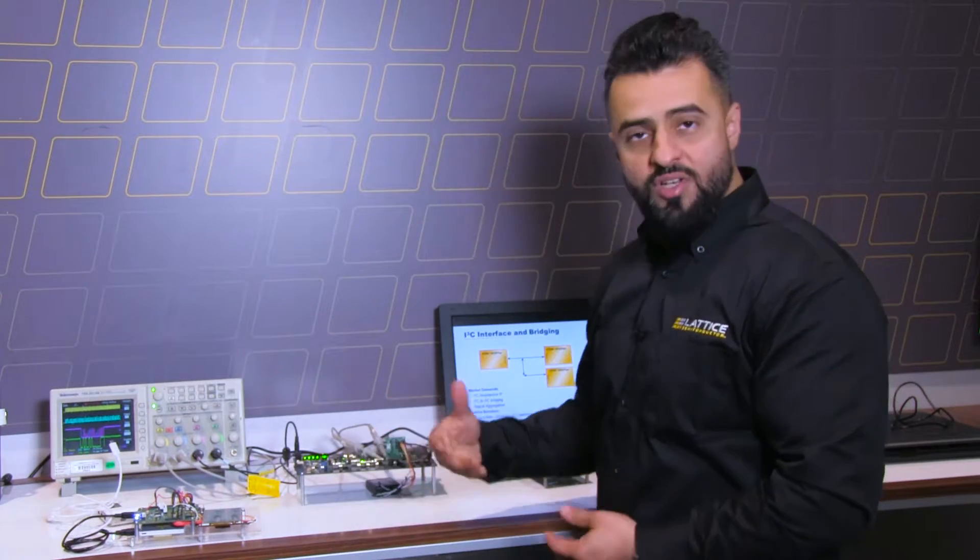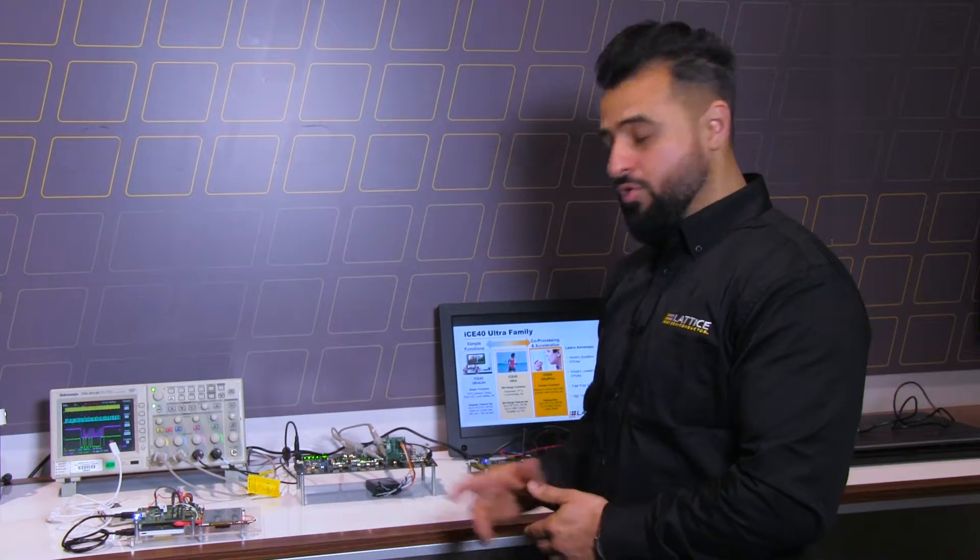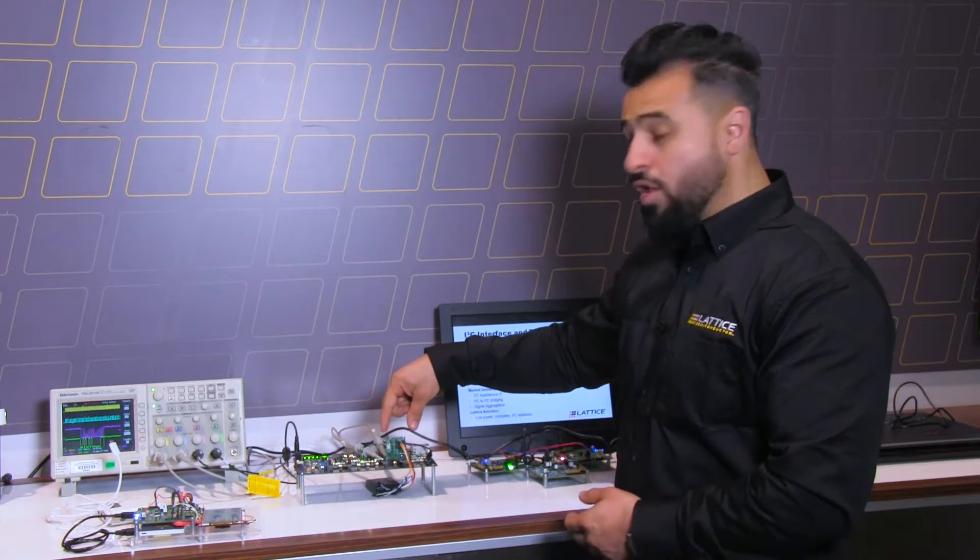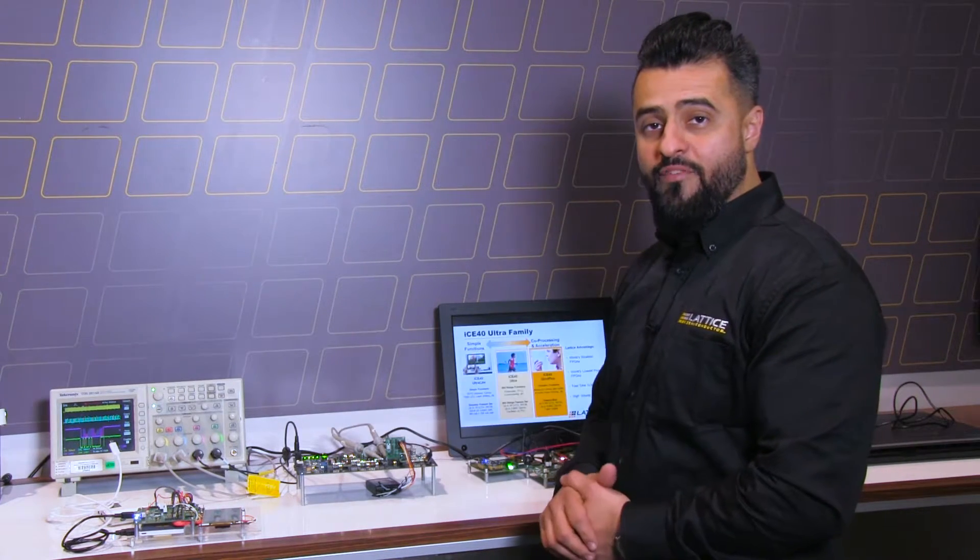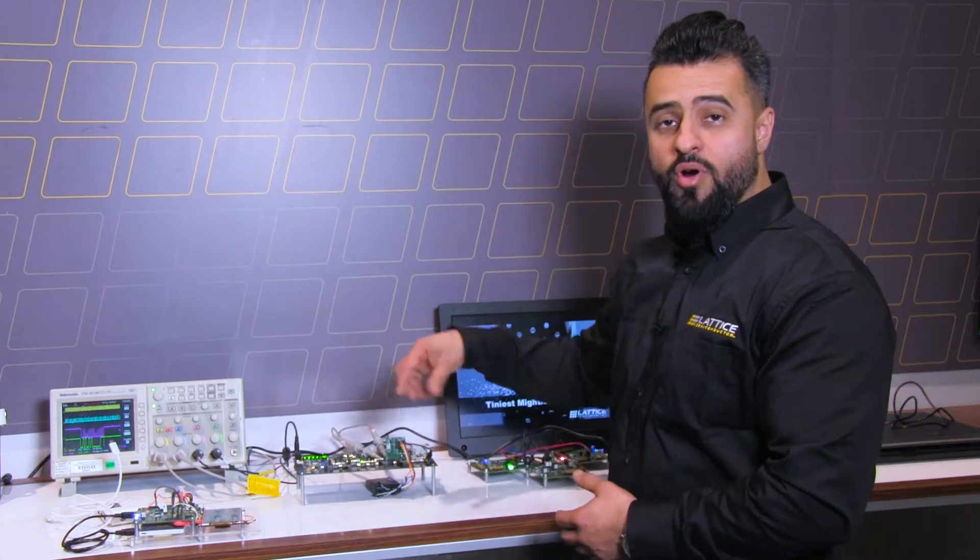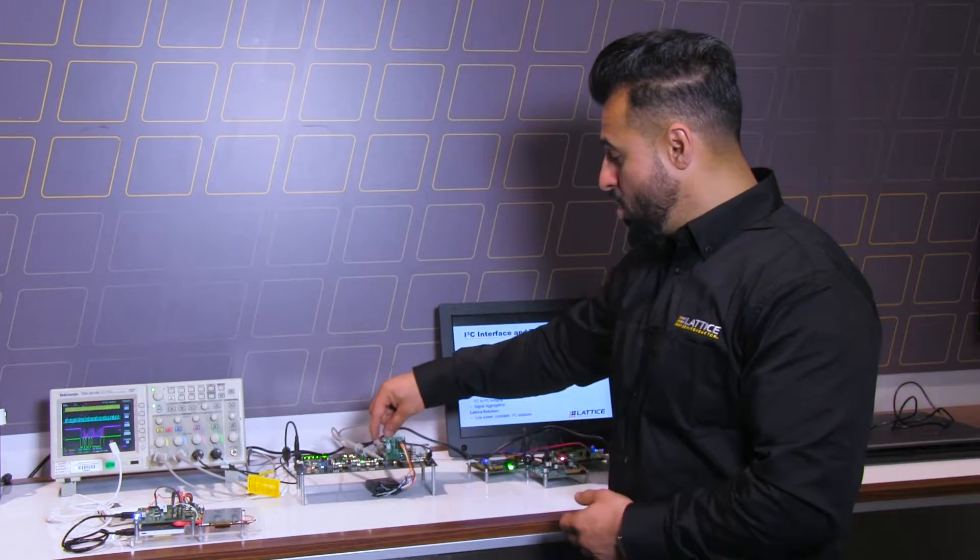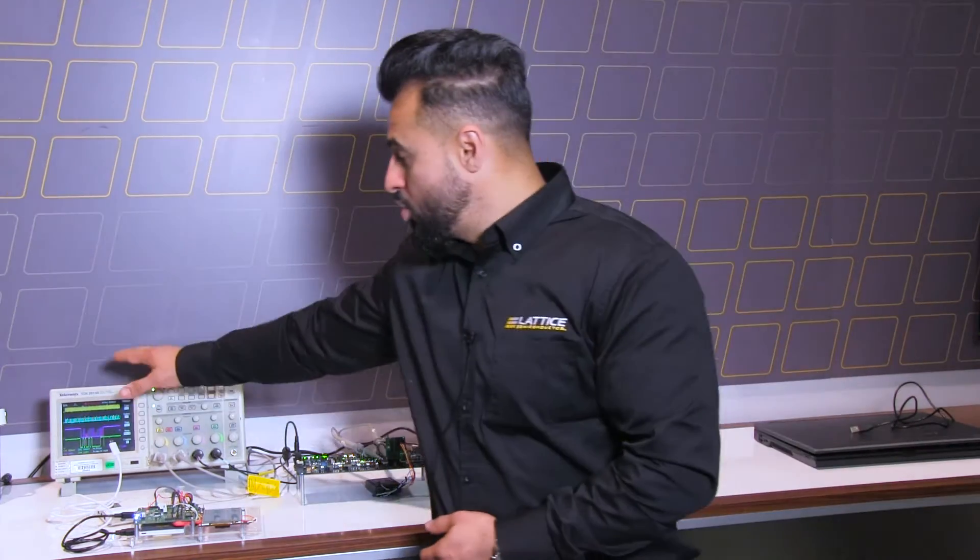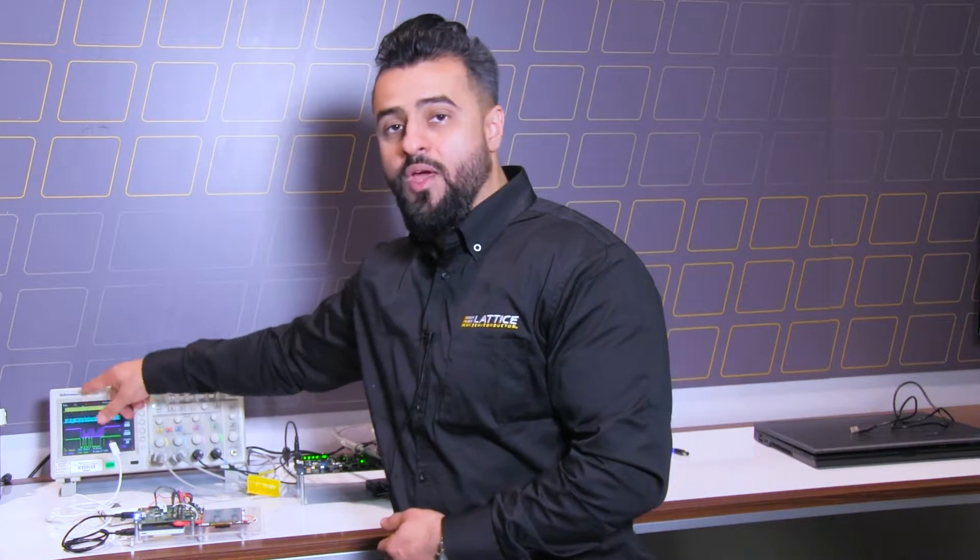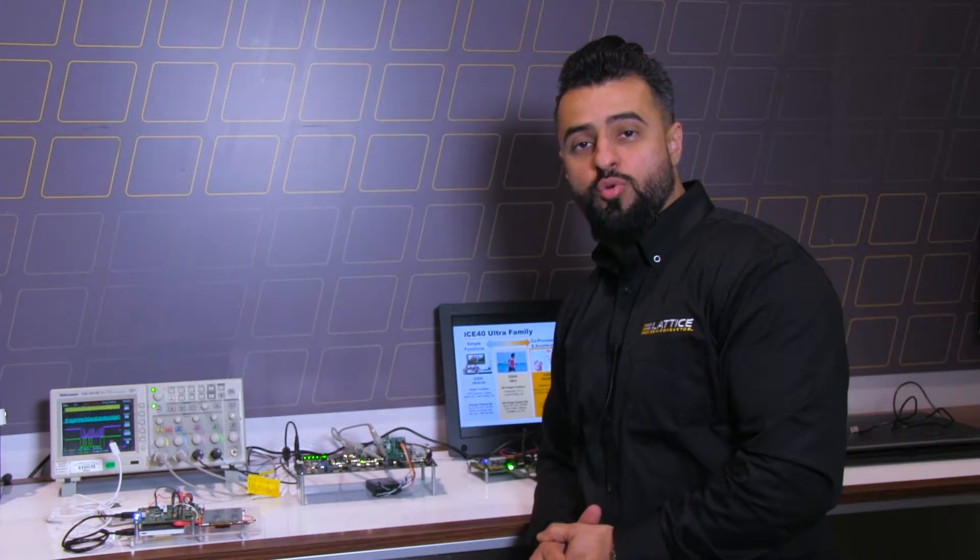This next demonstration again takes into consideration the signal aggregation, but now we're focused on audio. We have four PDM digital microphones connected to a small ICE40 Ultra 4K FPGA, and this ICE40 Ultra FPGA is basically taking the four digital microphones, converting it to I2S and sending it over a single stream. Now you have these probes showing on this Tektronix oscilloscope where you can see you have one data and one clock, so it basically combines four channels to a single two-bit interface.